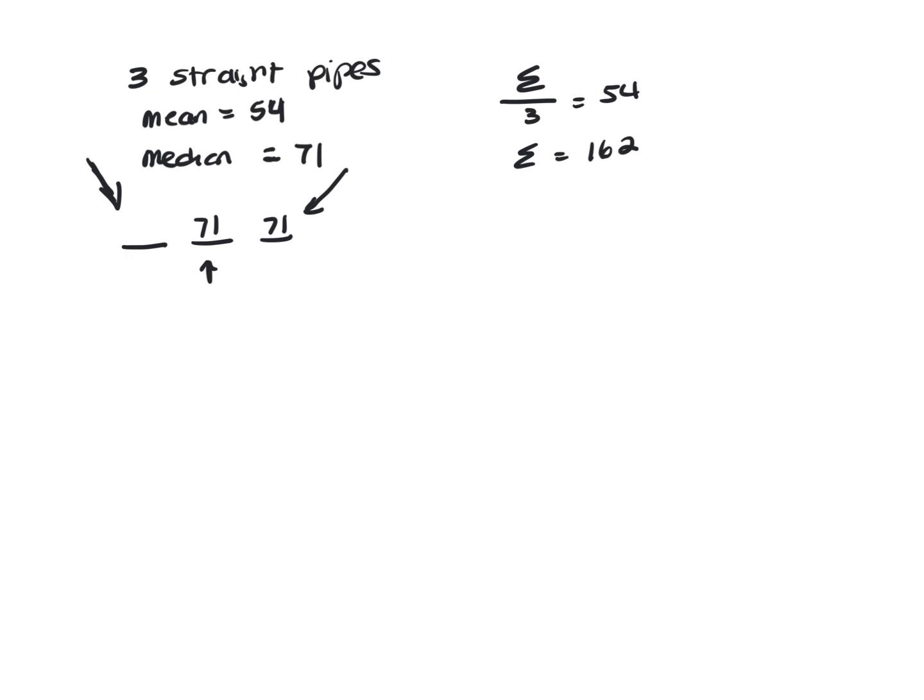So I've got, we'll just call this X. X plus 71 plus 71. We know the sum of the three lengths is 162.